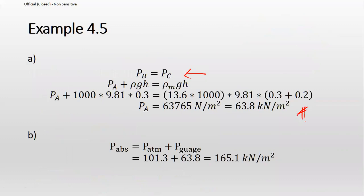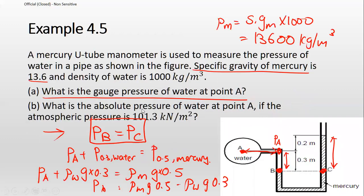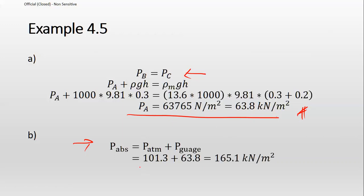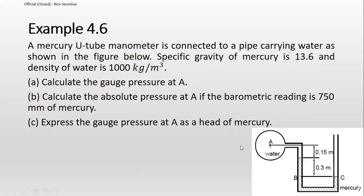What we have calculated is the gauge pressure. To get the absolute pressure, use P_absolute = P_atm + P_gauge. P_atm is given in the question as 101.3 kPa. Add them together to get your P_absolute.